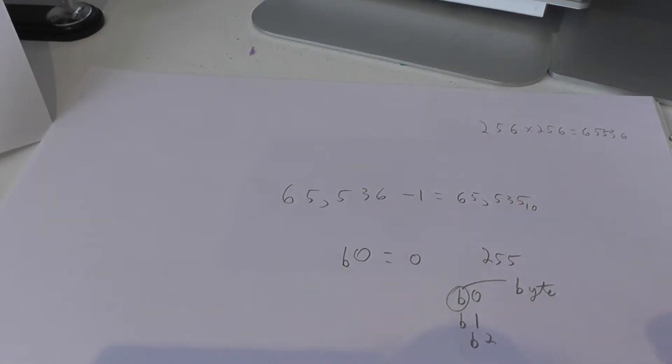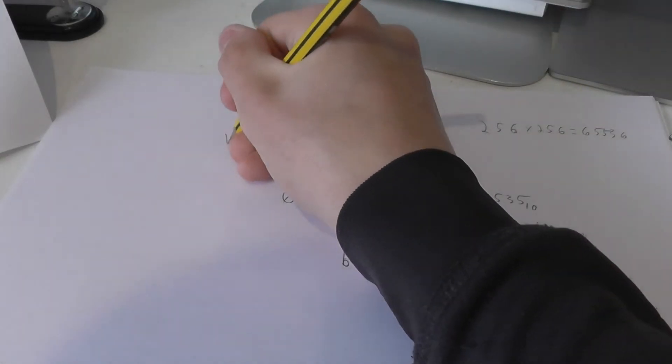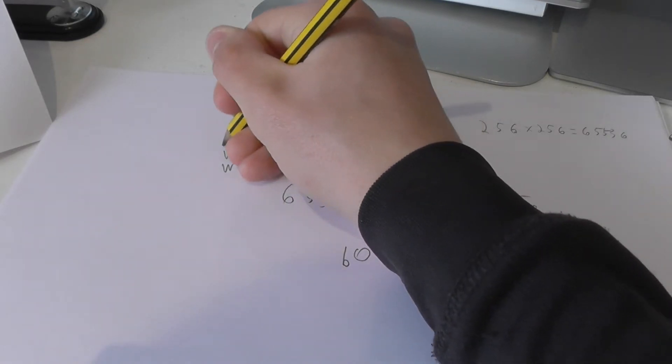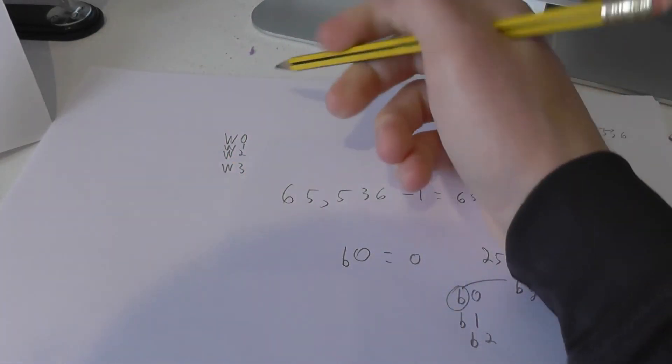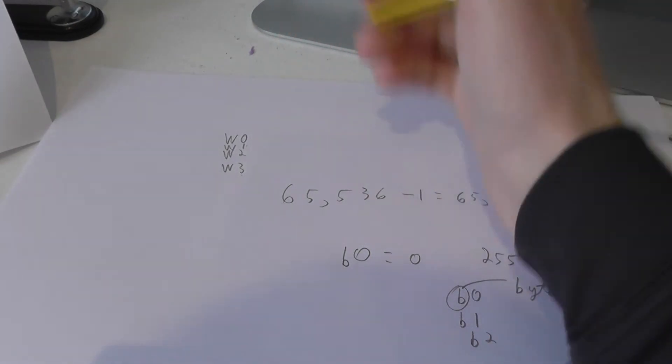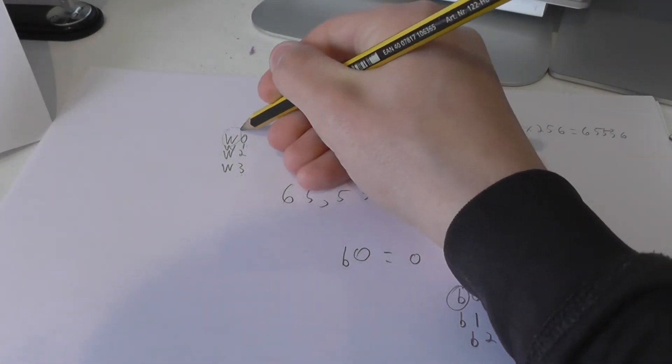We will come across a w variable, such as w0, w1, w2, w3, w4, w5, onwards. W there stands for word.